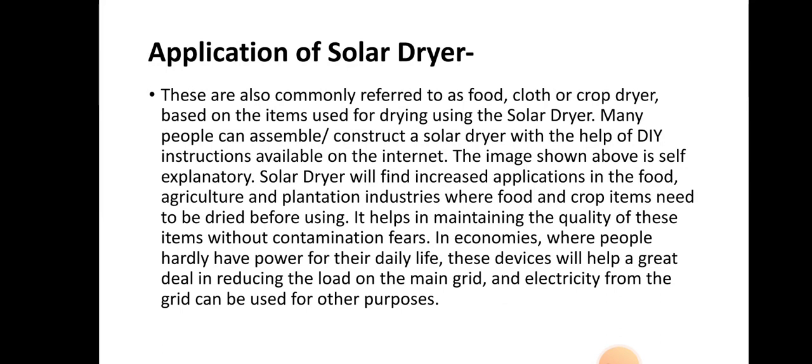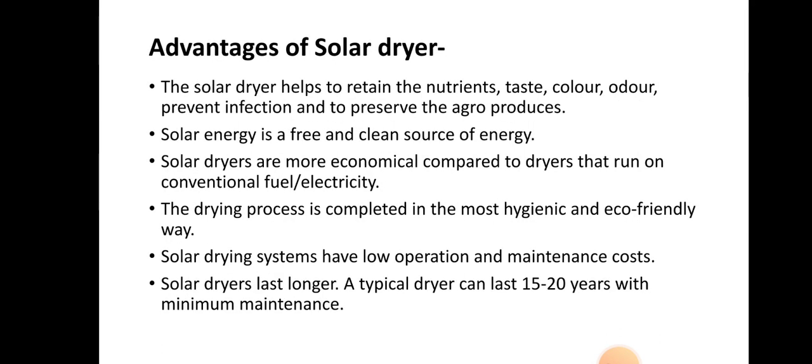Solar drying helps maintain the quality of these items without contamination from external factors. In economies where people hardly have power for their daily lives, these devices help a great deal in reducing the load on the main grid, and electricity from the grid can be used for other purposes. In natural convection dryers, fans are not required — heated air is used directly for drying, reducing the electricity load.